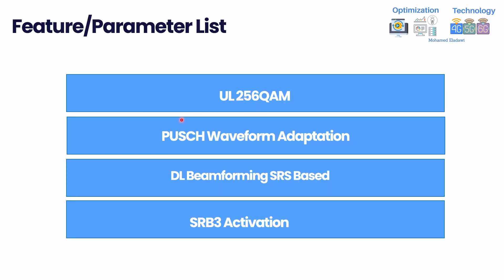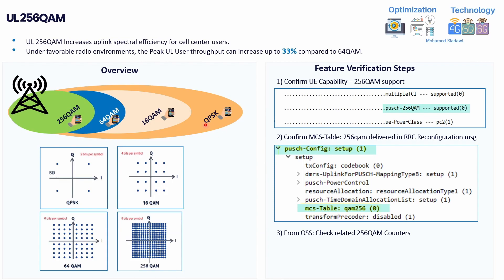This is today's agenda — we are going to cover four features. Moving forward, the first feature is Uplink 256 QAM. As you know, Uplink 256 QAM transfers eight bits per sample, compared to 64 QAM which transfers six bits per sample, providing around 33% improvement in the uplink peak throughput.